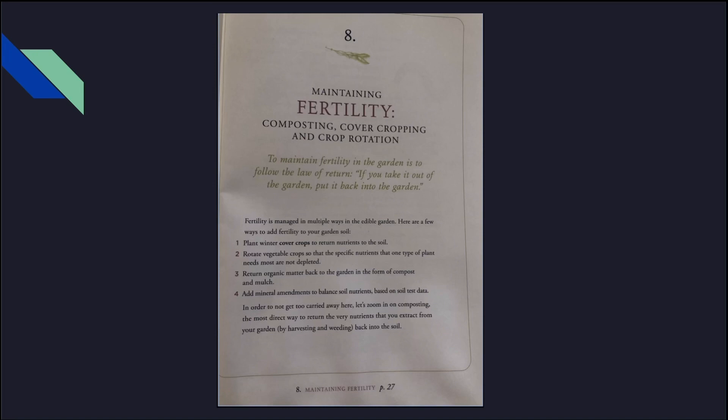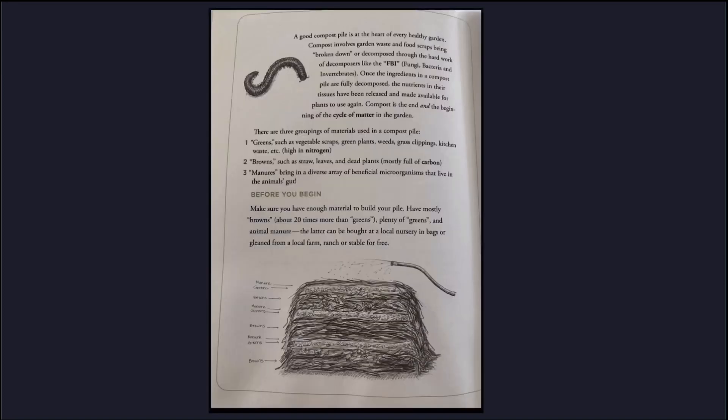Add mineral amendments to balance soil nutrients based on soil test data. In order to not get carried away here, let's zoom in on composting — the most direct way to return the very nutrients that you extract from your garden by harvesting and weeding back into the soil. A good compost pile is at the heart of every healthy garden. Compost involves garden waste and food scraps being broken down or decomposed through the hard work of decomposers like the FBI, which is fungi, bacteria...